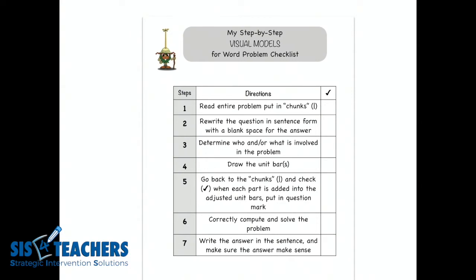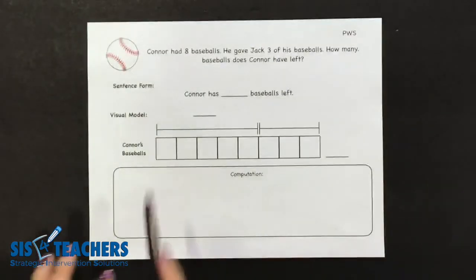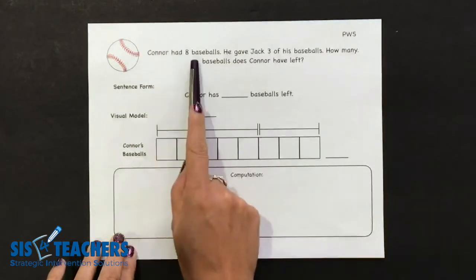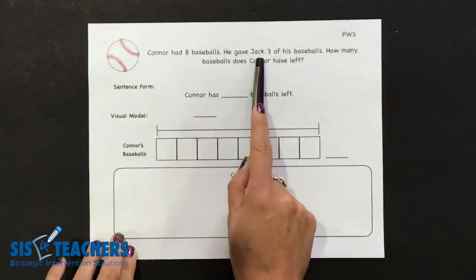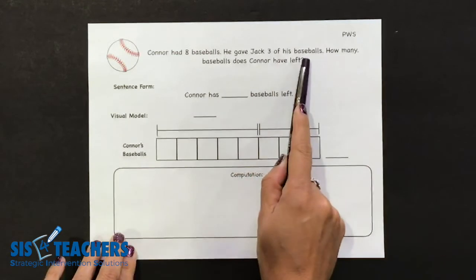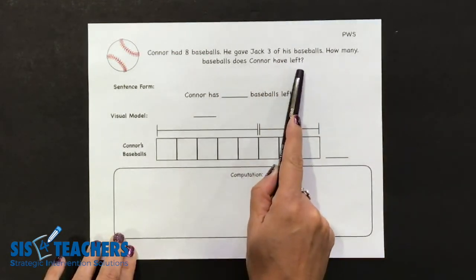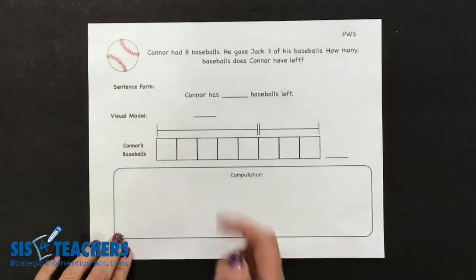The first step says to read the entire problem and put in the chunks. We'd like you to read the problem out loud, and then carefully look at the problem to find different mathematical chunks of information that we can point out. So if we look at the story problem we're focusing on today, it has to do with baseball. Connor had eight baseballs. He gave Jack three of his baseballs. How many baseballs does Connor have left? That's the first reading of the problem.